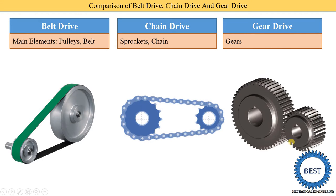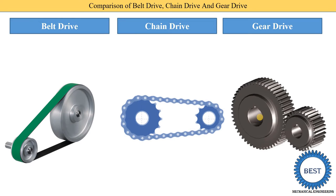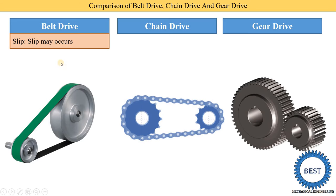Here we see two spur gears, or more than two gears, are used to transmit the power by using the gear drive. The second point is on the basis of slip. In a belt drive, slip may occur — slip means the driver pulley rotates but the belt does not rotate. This is called slip.